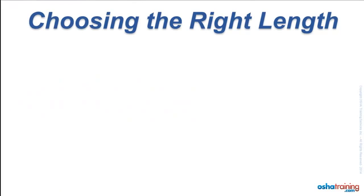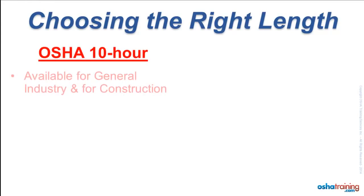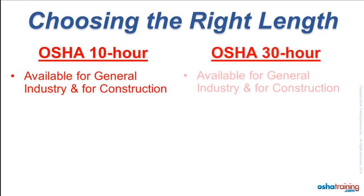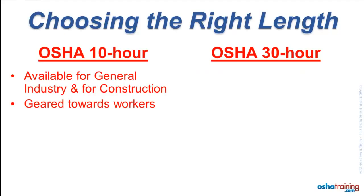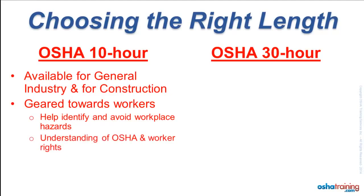There are a total of four OSHA outreach training courses available through our company. The first two are called the OSHA 10-hour courses for general industry and construction. The 10-hour courses are geared towards workers on the job and provide trainees with an understanding of basic health and safety hazards commonly found in the workplace so they can be avoided. The course also explains who OSHA is and some of the basic rights afforded workers under the OSHA Act. Participants who successfully complete either 10-hour course will receive the OSHA 10-hour wallet card for their industry.